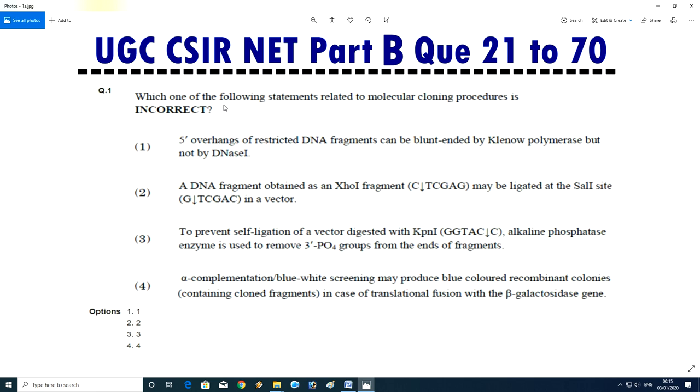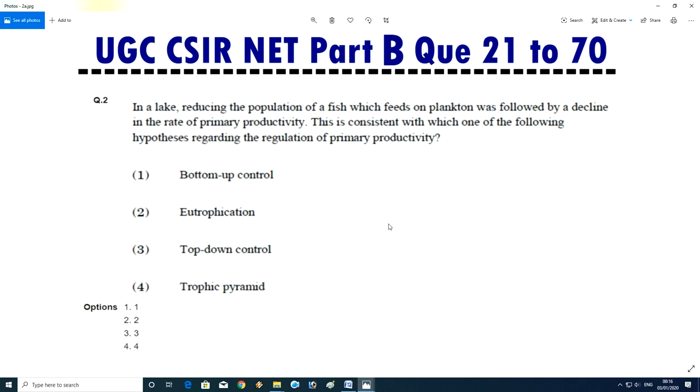Question No.1 - Which one of the following statement related to molecular cloning procedure is incorrect. Five prime overhang restricted DNA fragment can be blunt ended by polymerase but not by DNS1. A DNA fragment obtained as null fragments may be ligated at the SAL1 site in a vector. To prevent self ligation of vector, alkaline phosphatase enzyme is used to remove phosphate group from the end of fragment. Alpha complementation of blue white screening may produce blue colored recombinant colonies containing clone fragments in case of translational fusion with beta-galactosidase gene. The answer of this question is C, to prevent self ligation of vector.